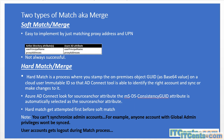Azure AD Connect by default looks for source anchor attributes, which by default goes to the MSDS Consistency GUID attribute. This is the default source anchor. In older versions it was object GUID, and in newer versions as well, if you don't explicitly define this attribute, ultimately it is the object GUID. Keep in mind that whenever Azure AD Connect tries to sync objects and perform a match or merge, it tries to do hard match first before attempting soft match.